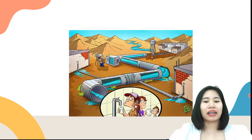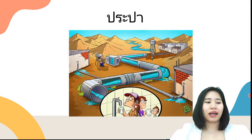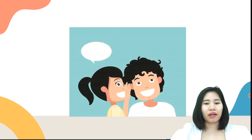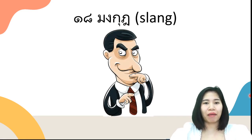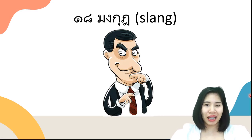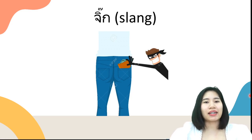Water supply in Thai we say ประปา. Next one, whisper in Thai we say กระซิบ. And the next one, con artist in Thai we say มิจฉาชีพ or สิบแปดมงกุฎ — this one is the slang one. And the last word, to pickpocket in Thai is also slang.